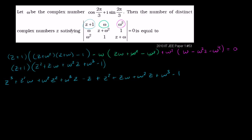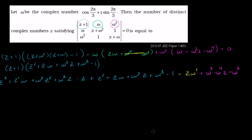The omega squared terms canceled, leaving minus z·omega squared. Then in magenta we have plus omega cubed minus omega cubed·z. Wait — omega squared times omega squared is omega to the fourth·z, and omega squared times omega to the fourth is omega to the sixth, with a negative sign, so negative omega to the sixth. This whole thing needs to equal zero.